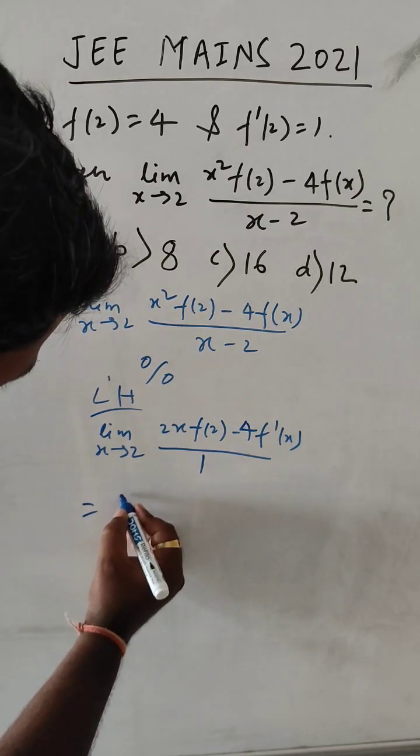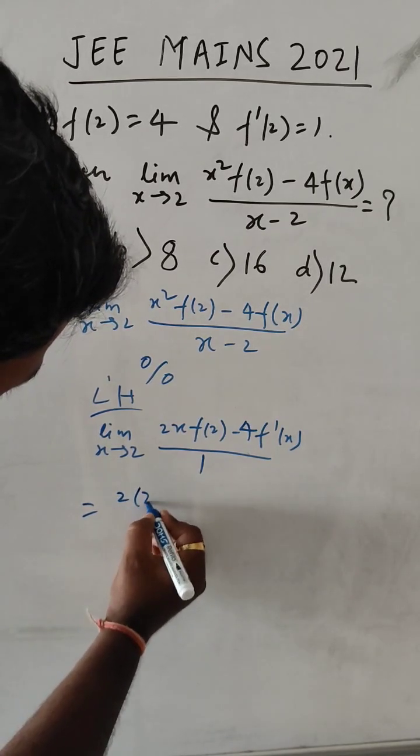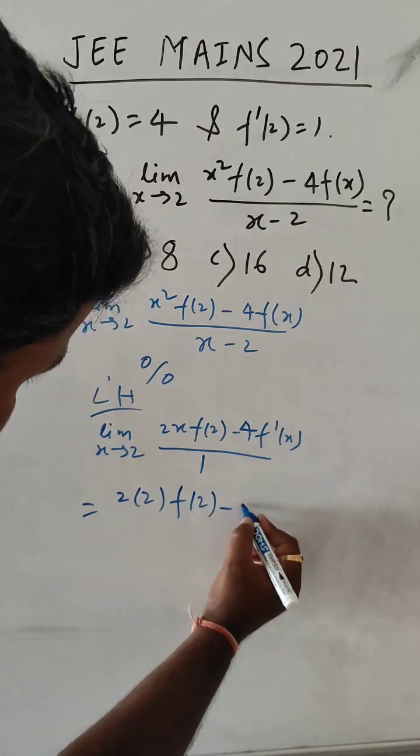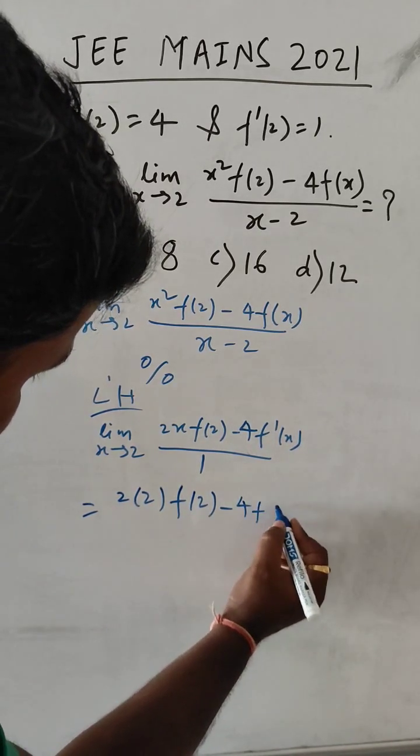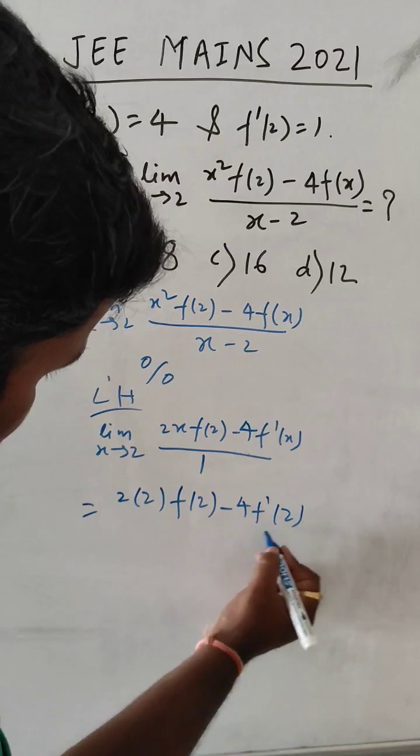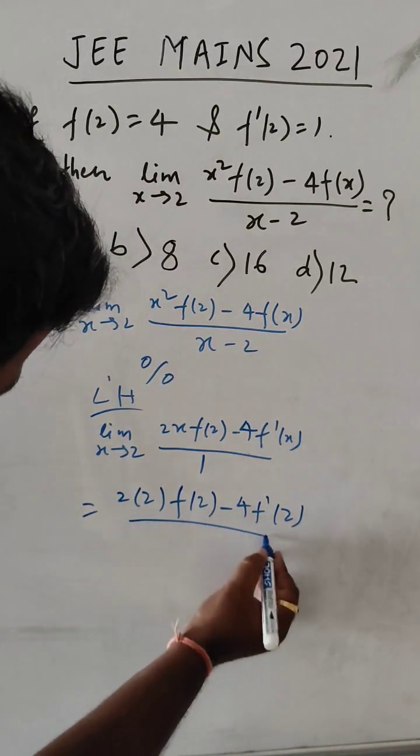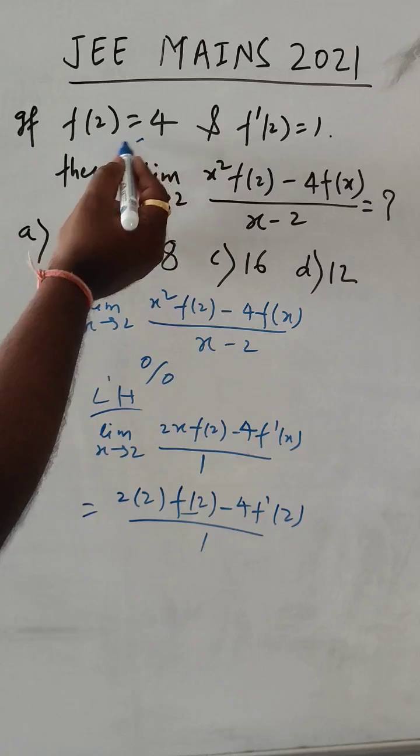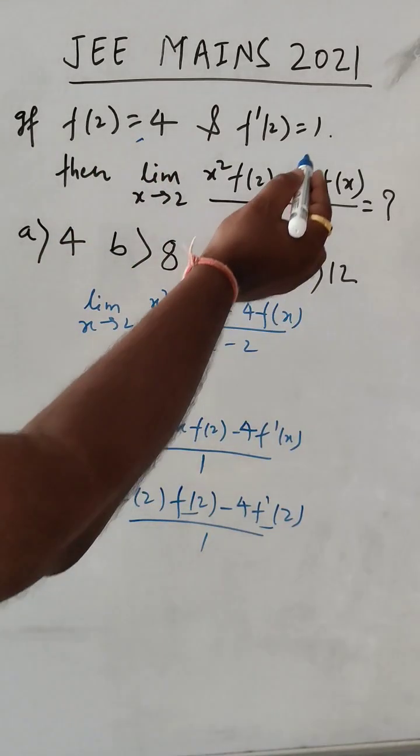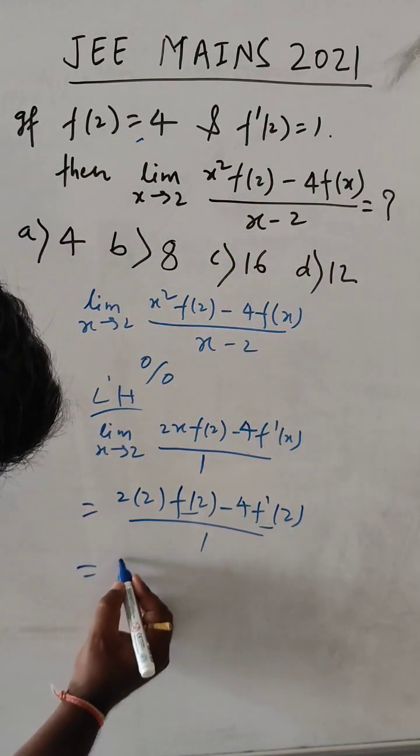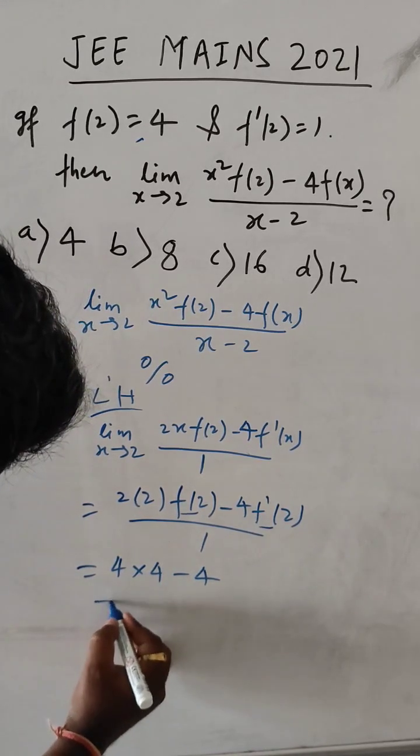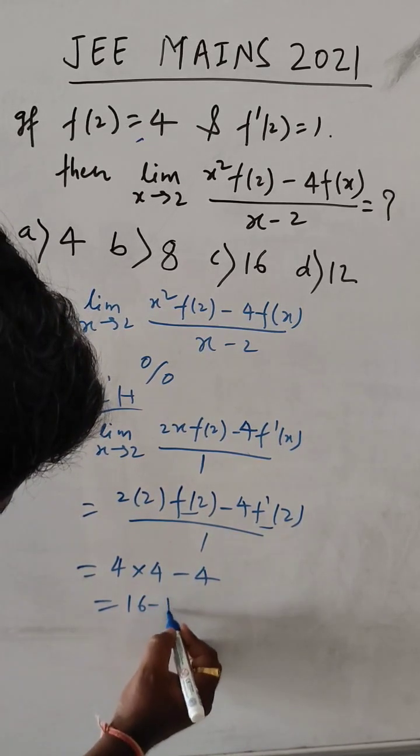So it will become 2(2) and f(2) - 4f'(2), and the denominator is 1. Now f(2) = 4 and f'(2) = 1, so it is 4 × 4 - 4 × 1, which gives 16 - 4 = 12.